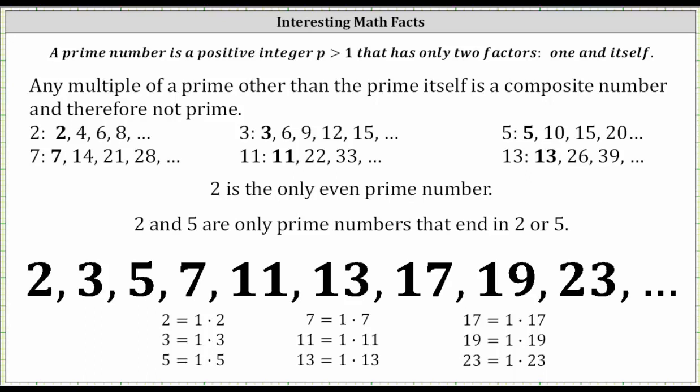I've listed out the first several primes below: two, three, five, seven, 11, 13, and so on. All of these are positive integers greater than one that only have two factors, one and itself, which we see below.